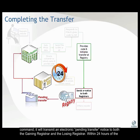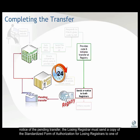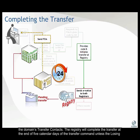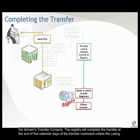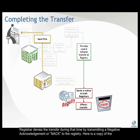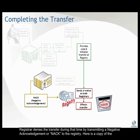Within 24 hours of the notice of the pending transfer, the Losing Registrar must send a copy of the standardized form of authorization for Losing Registrars to one of the domain's transfer contacts. The registry will complete the transfer at the end of five calendar days of the transfer command, unless the Losing Registrar denies the transfer during that time by transmitting a Negative Acknowledgement, or NAC, to the registry.